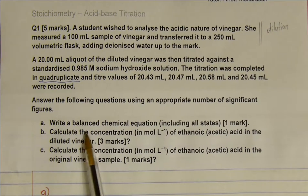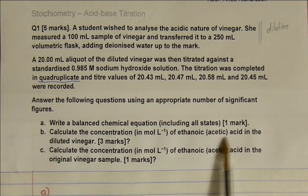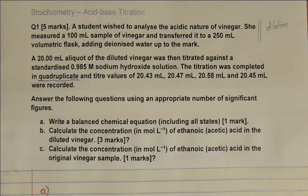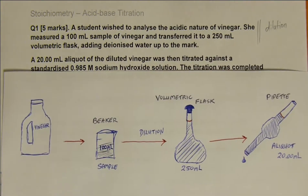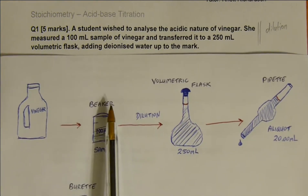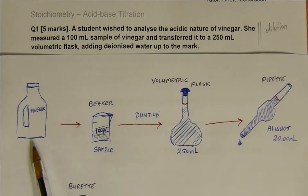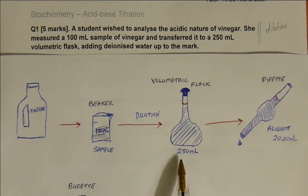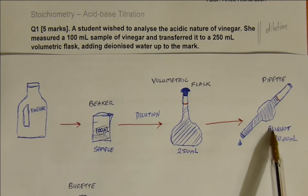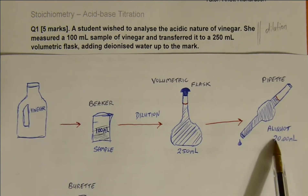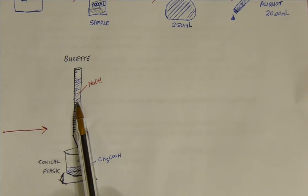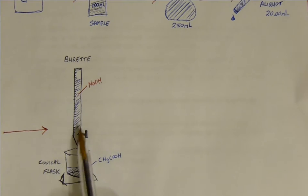Answer the following questions: a balanced chemical equation, calculate the concentration of ethanoic or acetic acid in the diluted vinegar, and then the concentration back in the original sample. What I've done is sketched out the steps: we started with our stock solution of vinegar, grabbed 100 mL of it, diluted it up to the mark in the volumetric flask — from 100 mL up to 250 mL with added water. We then pipetted an accurate aliquot of 20 mL from the volumetric flask into a conical flask containing the acetic acid, filled the burette with sodium hydroxide, and performed the titrations four times.